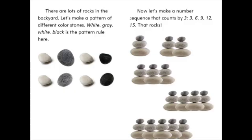There are lots of rocks in the backyard. Let's make a pattern of different color stones. White, gray, white, black is the pattern rule here. Now let's make a number sequence that counts by 3: 3, 6, 9, 12, 15. That rocks!